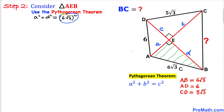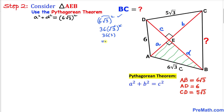Let's simplify the right-hand side: 6² = 36, and (√3)² = 3, so 36 × 3 = 108. Therefore our equation becomes a² + d² = 108. We'll call this Equation 1.